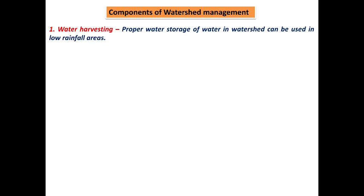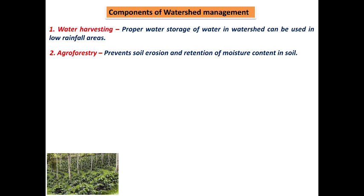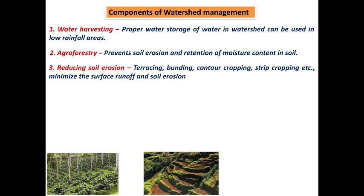Next we are going to see about the components of watershed management. There are six components. The first is water harvesting: proper storage of water in watershed can be used in low-rainfall areas, allowing even small amounts of rainfall to be utilized properly. The second component is agroforestry: it prevents soil erosion and retains moisture content in the soil. In high-rainfall areas, woody trees are grown between crops at proper intervals to reduce runoff and retain more nutrients in the soil.